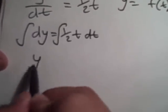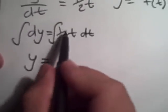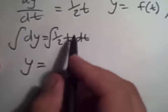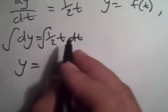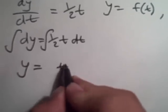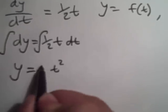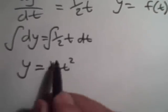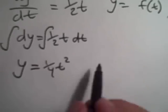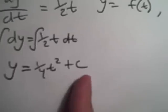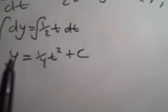We get y equals, the antiderivative of 1 half t. 2 times 2 is 1 fourth. So we get 1 fourth t squared plus C because remember we have no idea what that C is.